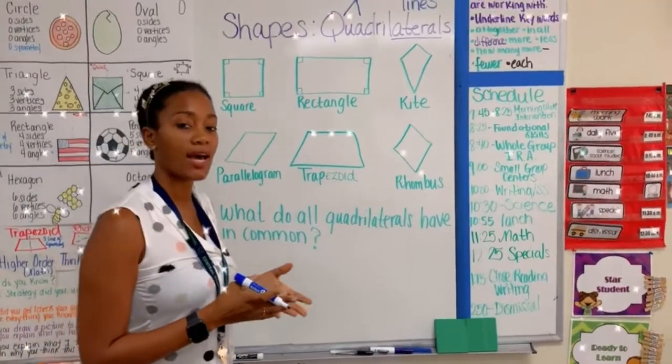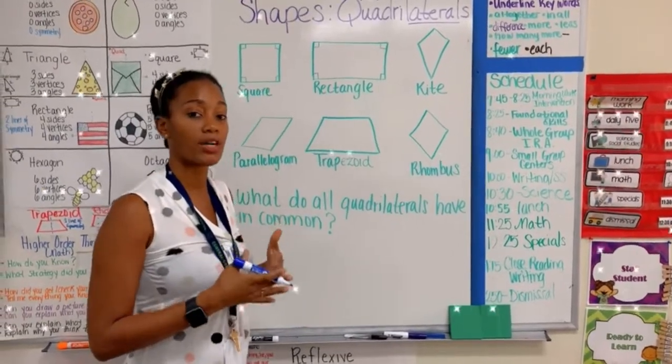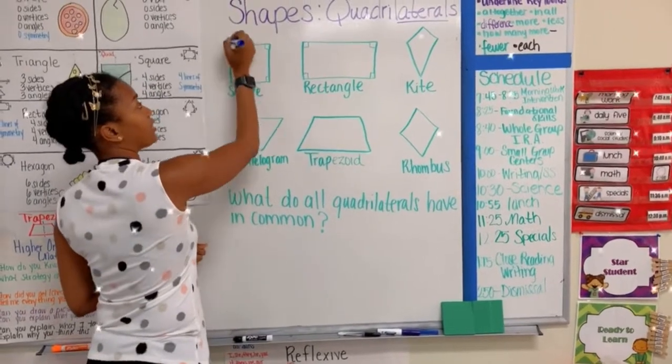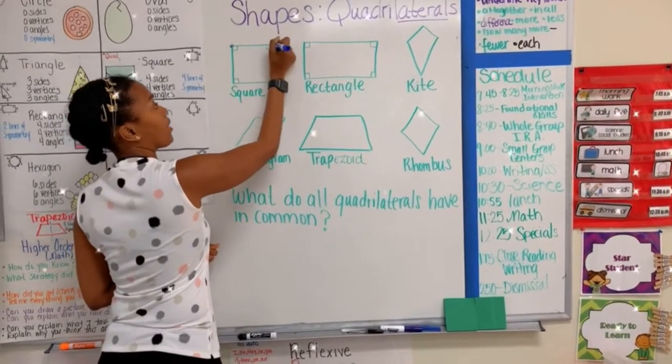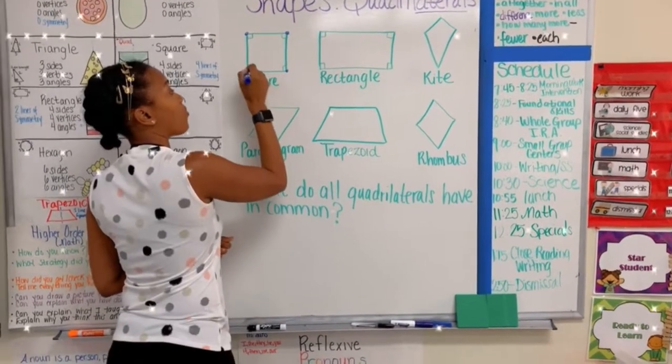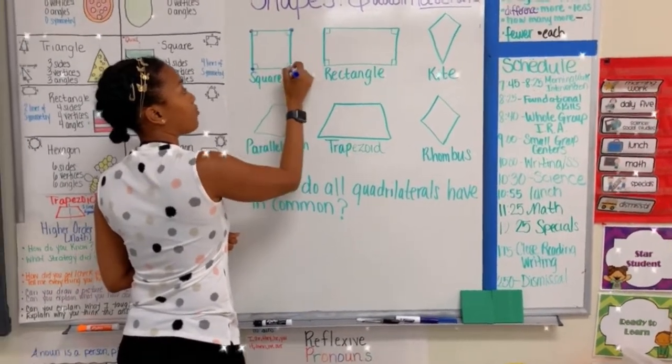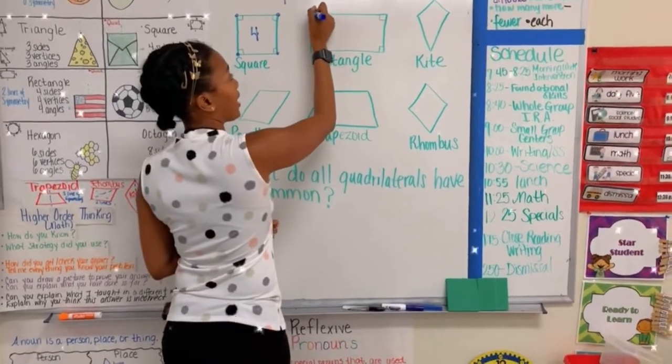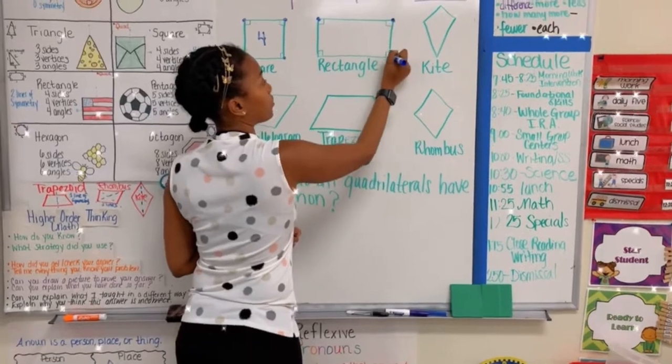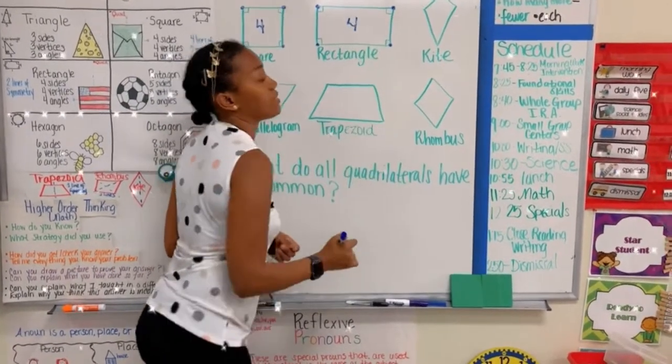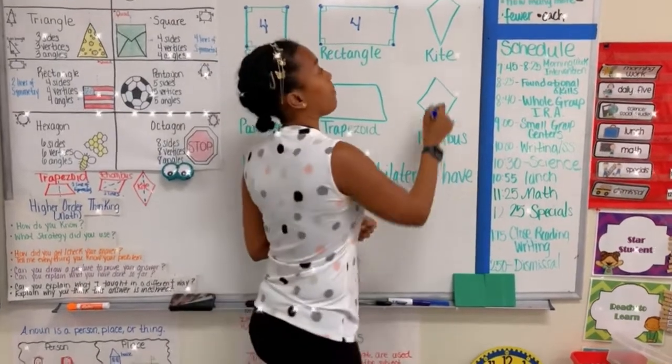First, let's count how many vertices are in each quadrilateral. In my square, my vertices are here, where two lines meet. So I have one, two, three, four. There are four vertices. In my rectangle, I have one, two, three, four. So there are four vertices in my rectangle.